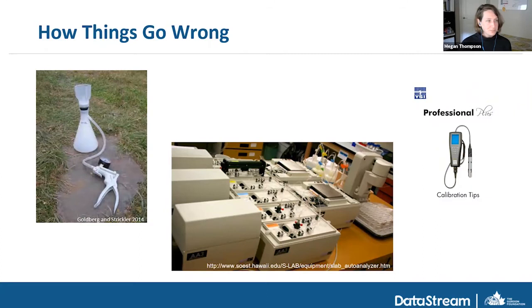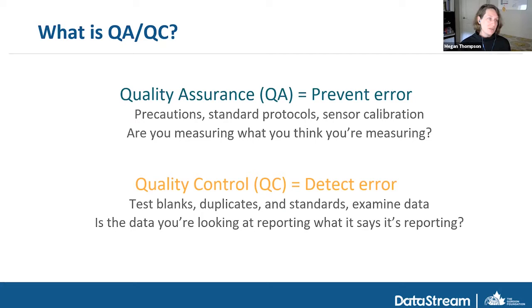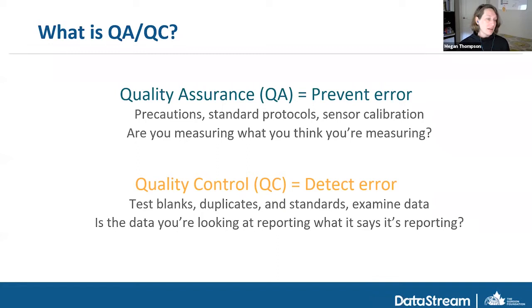So what is QAQC? These are the ways we try to reduce systematic and sampling errors, as well as some bias and random errors. Quality assurance can be thought of as a way of preventing error — taking precautions, following standard protocols, making sure sensors are calibrated, talking to your lab, and even thinking about study design to ensure you're measuring what you intend to measure. Quality control is a follow-up to sampling and QA — taking extra samples and doing extra steps to check that you've reduced error as much as possible.